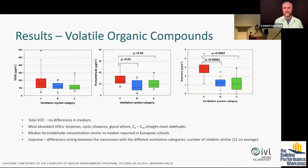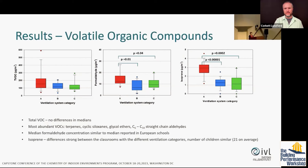Looking at volatile organic compounds expressed as total VOCs, there were no differences in medians among ventilation categories. There were no really exciting chemicals — the usual suspects: terpenes, cyclic siloxanes, glycol ethers, and straight-chain aldehydes from hexanal to decanal. But at the individual VOC level, we did see differences: formaldehyde was higher in category A classrooms compared to the others, and the same was true for isoprene, where differences between naturally and mechanically ventilated classrooms were even more statistically significant.